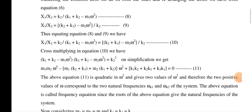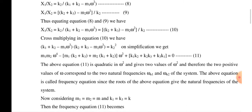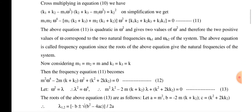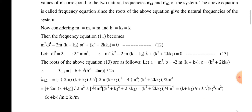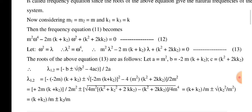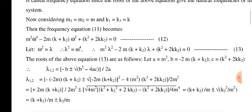Thus the mode shape ratio x1/x2 = k2 / (k1 + k2 − m1·ω²), and also x1/x2 = (k2 + k3 − m2·ω²) / k2. Considering m1 = m2 = m and k1 = k3 = k, substituting all these values, we proceed to solve.